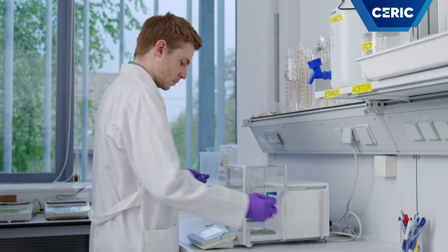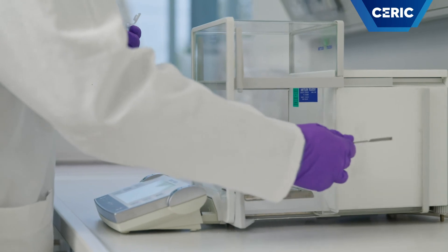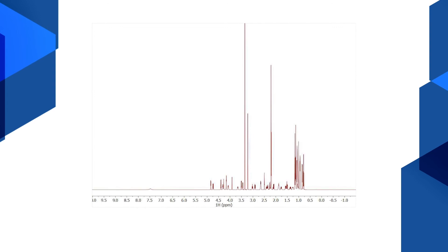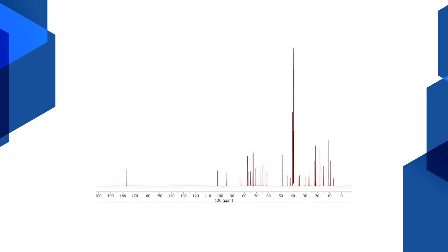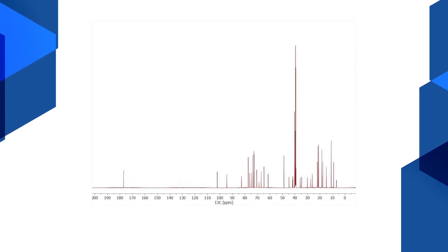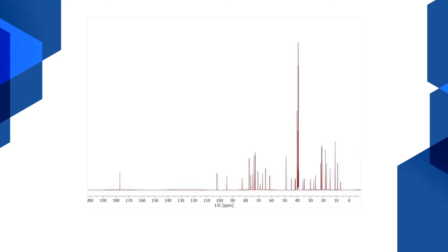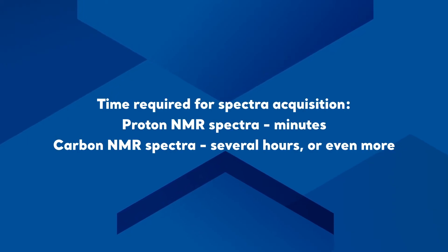However, a low natural abundance of these isotopes can be a problem. The most commonly investigated NMR active nucleus is the hydrogen-1 nucleus, called a proton in NMR. In the case of hydrogen, the natural abundance of hydrogen-1 is almost 100%. In contrast, when recording carbon NMR, the natural abundance of the NMR active nucleus carbon-13 is only 1.1%. Therefore, proton NMR spectra can be acquired in minutes, while carbon NMR spectra take several hours or even more to record.